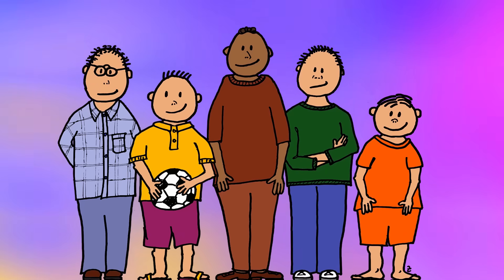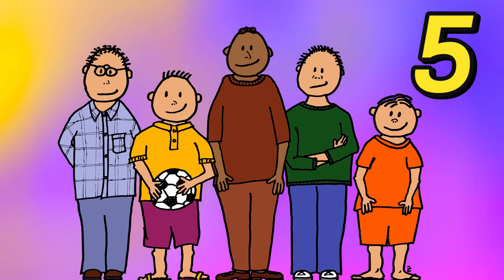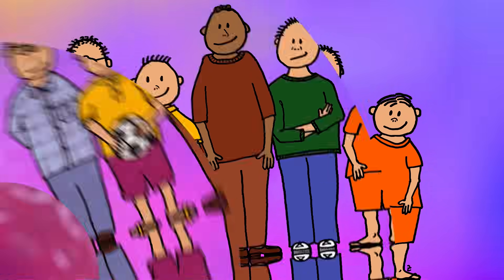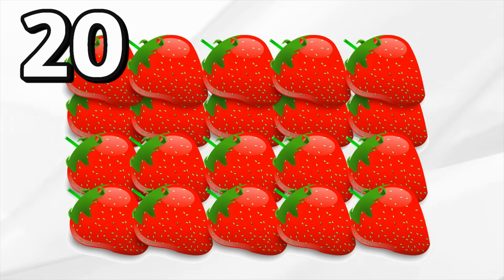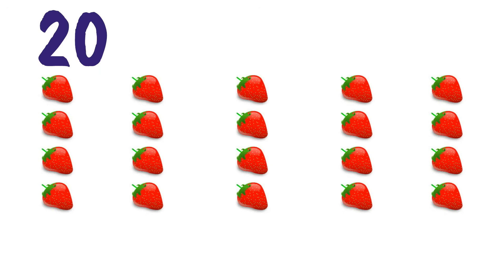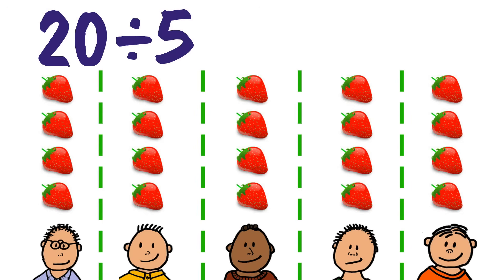Let's try this one next. There are five people who have been playing outside and are going to take a quick snack break. They have twenty strawberries in all and want to divide them amongst each other. There are twenty strawberries and we are dividing them into five groups — one for each person. Twenty divided by five. What is twenty divided by five? Yeah, four. Awesome. Twenty divided by five equals four. That means each person gets four strawberries. Four is the quotient.